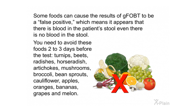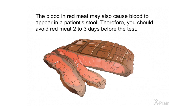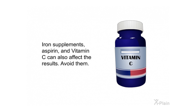Some foods can cause the results of G-FOBT to be a false positive, meaning it appears there is blood in the stool even when there is none. You need to avoid these foods two to three days before the test: turnips, beets, radishes, horseradish, artichokes, mushrooms, broccoli, bean sprouts, cauliflower, apples, oranges, bananas, grapes, and melon. Red meat may also cause blood to appear in a patient's stool, so avoid red meat two to three days before the test. Iron supplements, aspirin, and vitamin C can also affect the results — avoid them as well.